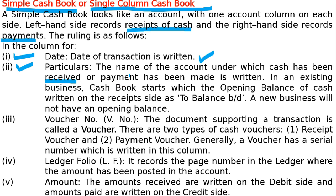In an existing business, the cash book starts with the opening balance of cash, retained on the received side as 'to balance b/d'. If it is a new business, there will be no opening balance — instead, it will be written as 'to capital account'.